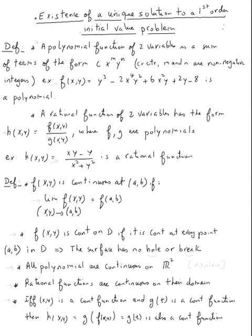The topic is existence of a unique solution to a first order initial value problem. Here's a good review from Calc 3. A polynomial — looking at the definition — a polynomial function of two variables is a sum of terms of the form C times x^m times y^n, where C is a constant and m, n are non-negative integers. Here's an example of a function that's a polynomial.